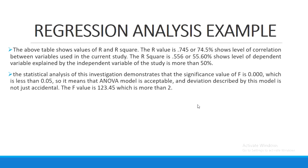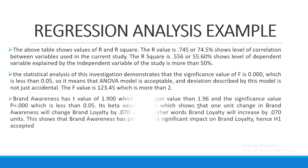The F-value's significant value should be 0.00, less than 0.05, which means the model is acceptable. The current F-value is 123.45, which is more than 2, showing that the model is a good fit. For the t-value: brand awareness t-value is 1.900, which is bigger than 1.96, and the significance value is 0.005 which is less than 0.05 — so the hypothesis is accepted.